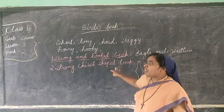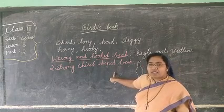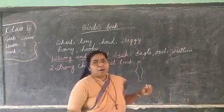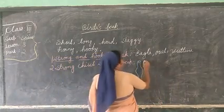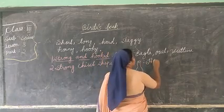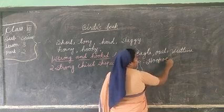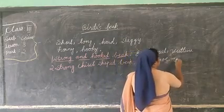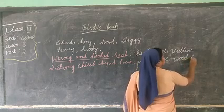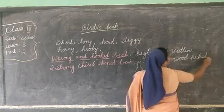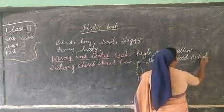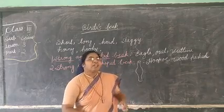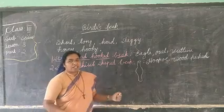Where can we find this type of beak? We can find it in the hoopoe bird. Have you seen the hoopoe bird? We can also find this kind of beak in the woodpecker. Have you observed the beak of the woodpecker? Its beak is a little long and chisel-shaped. You can find all these pictures in your textbook.